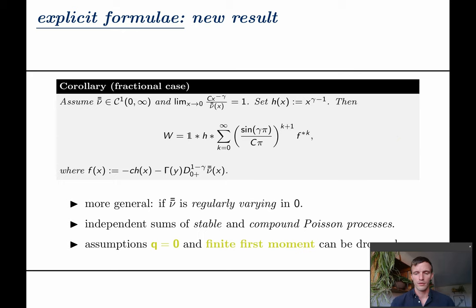This concludes the first of our two goals but let me quickly state that in our article we also show similar formulae if double bar ν is regularly varying in zero. We compute some explicit cases and of course we show the results in all generality that is without the assumptions on q and ν.